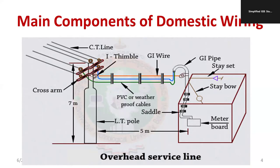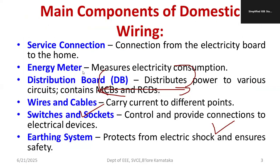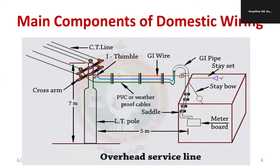As you can observe, from the supplying company — KSEB, BESCOM, MESCOM — a line is taken to the domestic building. The segment connecting the supplying company to the building is known as the service line. This service connection interlinks the supply company to the house or domestic building. The second component is the energy meter.